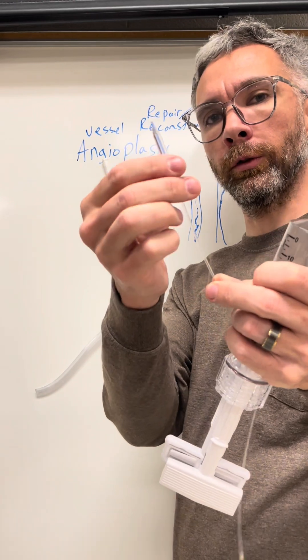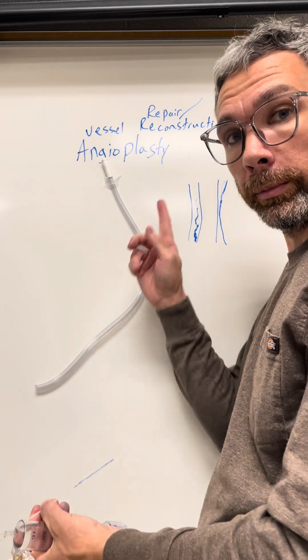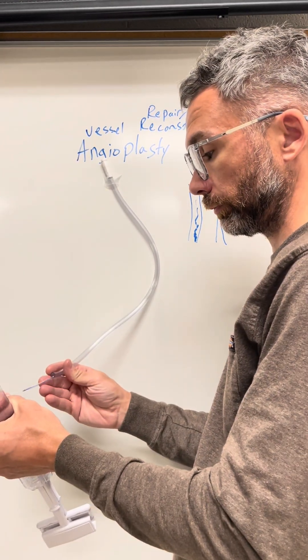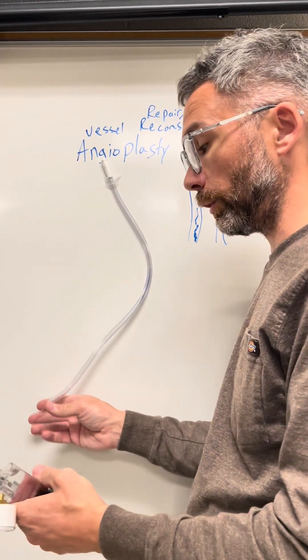As you can see, it blows a little balloon up right here. So what you're going to do is take this balloon, you're going to feed a wire up into your vessel, follow it with this into the area of concern that you're wanting to repair.